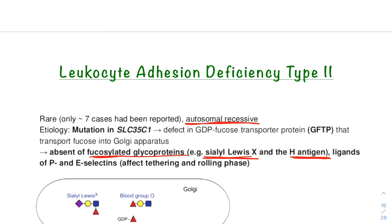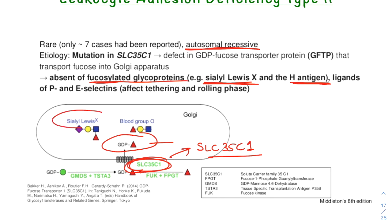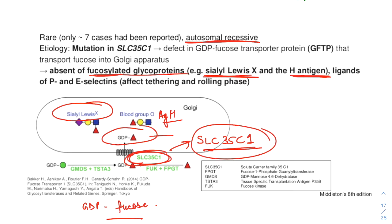The molecular defect in LAD2 has been localized to the pathway that synthesizes GDP fucose. The GDP fucose pathway is deficient because of a defect in the gene SLC35C1. This gene defect leads to a defect in the GDP fucose pathway, which leads to a defect in the production of Sialyl-Lewis-X and the H antigen on the RBCs. The exact genetic defect that accounts for the generalized fucosylation defects is yet to be fully determined, but SLC35C1 is the main genetic defect found.